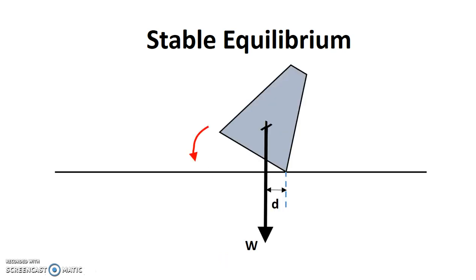So if I have to tilt it slightly, check out what happens. When you tilt it slightly, you actually see that there's a pivot here, and there's a small perpendicular distance here. So what kind of moment does it give you? That's right, it gives you an anti-clockwise moment.